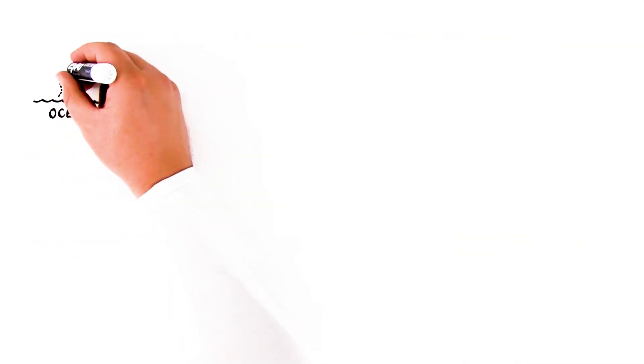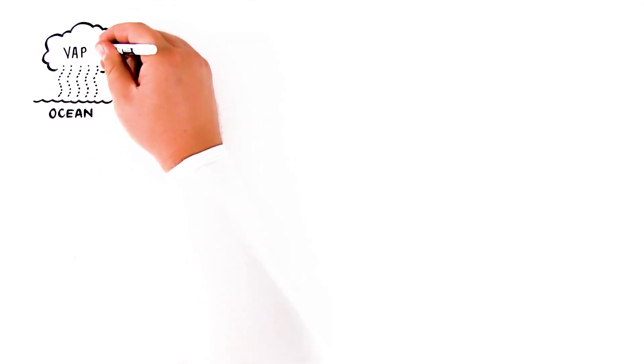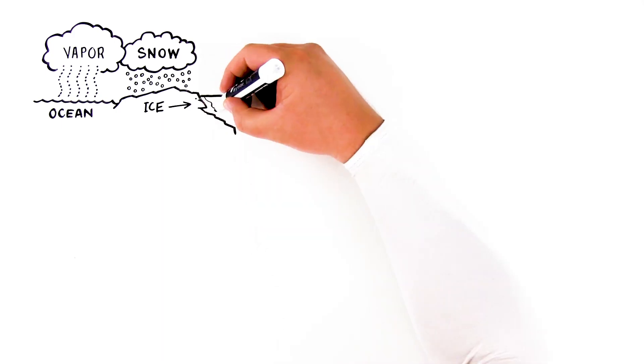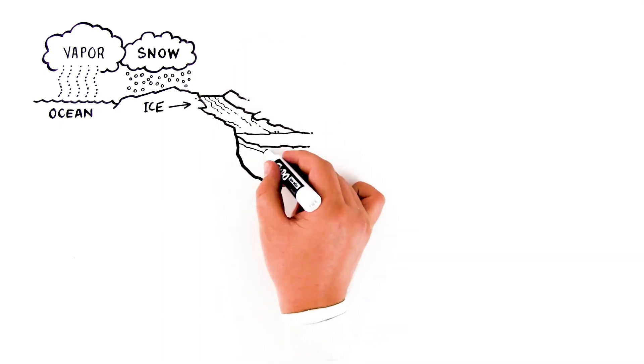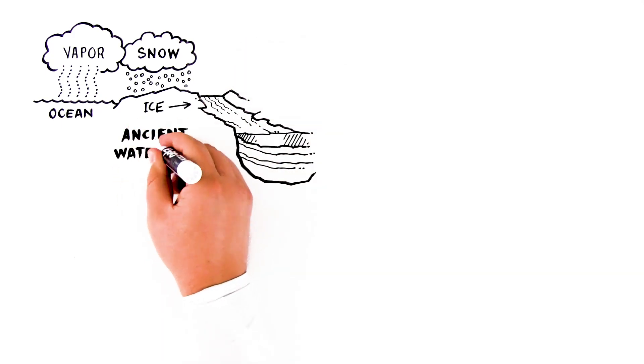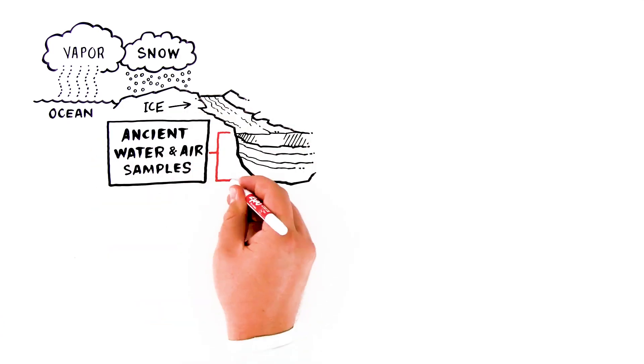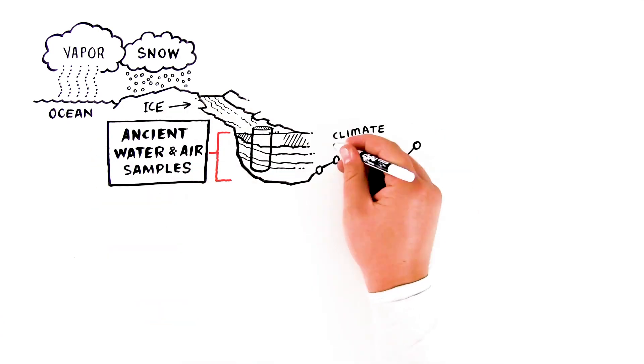The water that forms glaciers starts as vapor from the ocean, which then falls as snow and is compacted into ice. The ice layers preserve water and air samples that are hundreds of thousands of years old. By drilling cores into ice, scientists can learn about climate changes and atmospheric pollution.